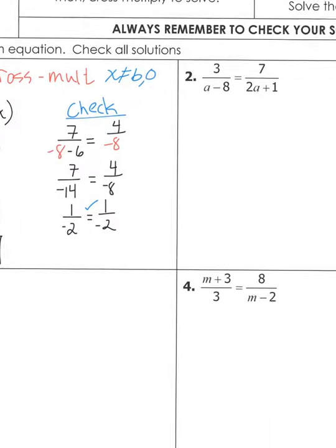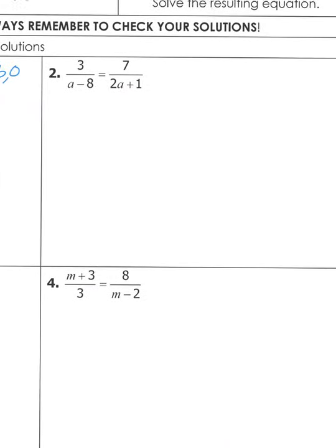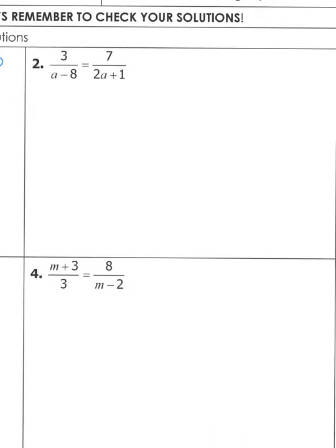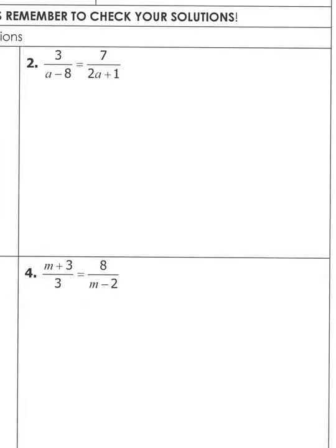Pause the video and do number two on your own. The only thing to remember is you're taking three times the first binomial and seven times the second binomial — make sure you distribute all the way through those binomials.